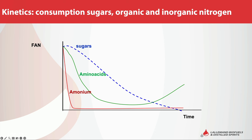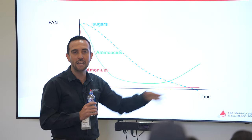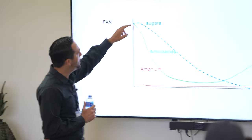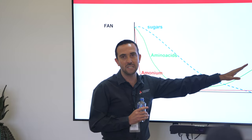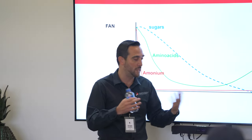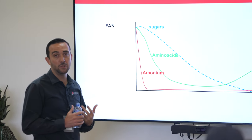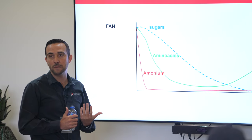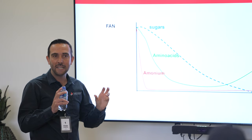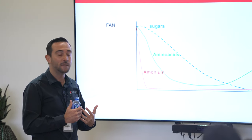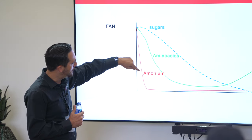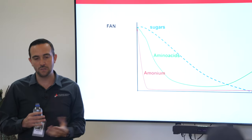Finally, just to show kinetics: we provide sugars in fermentation and can track their consumption over time. Amino acids are used very fast at the beginning and then are released as yeast cells die. Some producers use urea — we don't recommend urea because ethyl carbamate and other carcinogenic compounds can form. Nitrogen from a good inorganic source is required for the yeast. That's the idea of the kinetics. Any questions?